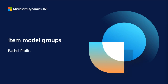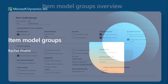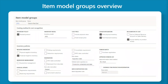Now let's talk about item model groups. The item model group is the fundamental configuration controlling the costing and behavior of an item when you post transactions. There's no limit to the number you can configure, but carefully plan your business scenarios and only create what is needed. Using multiple item model groups provides flexibility so not all items need to use the same policies. At a high level, the policies include the inventory policy, which defines if an item is stocked or not stocked — whether the system creates inventory transactions or expenses the item.